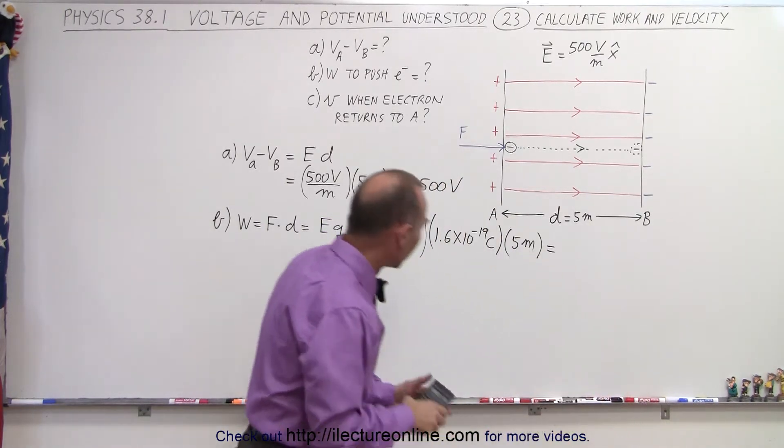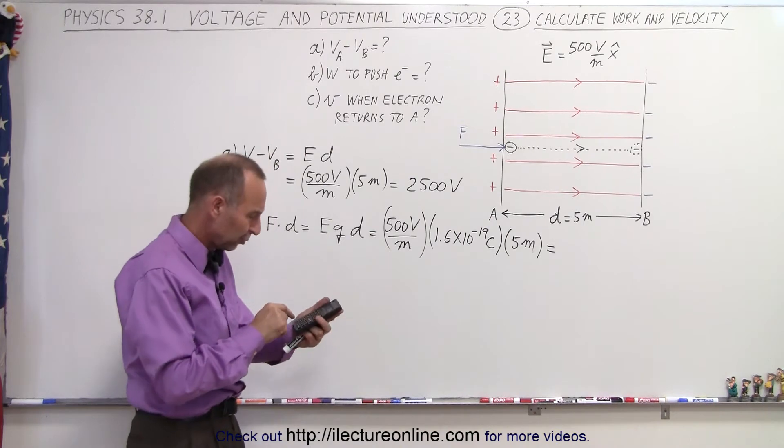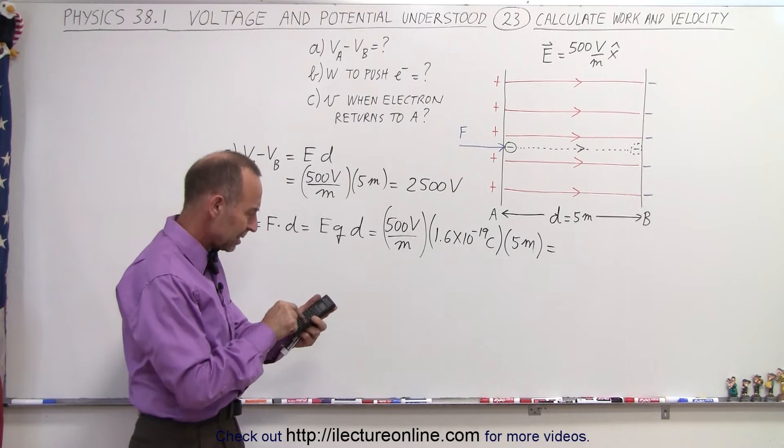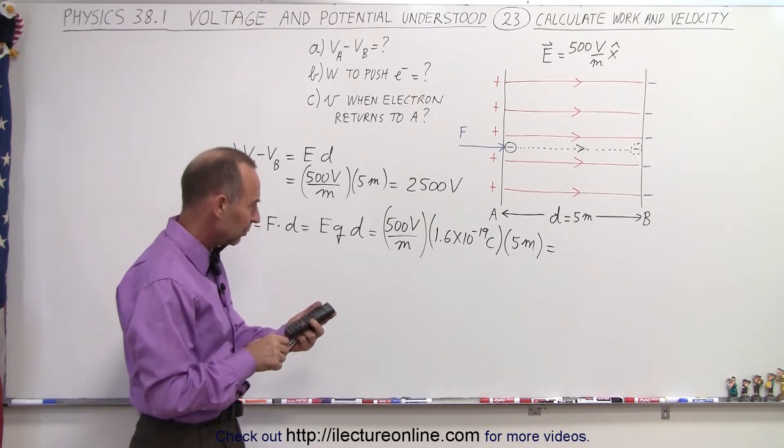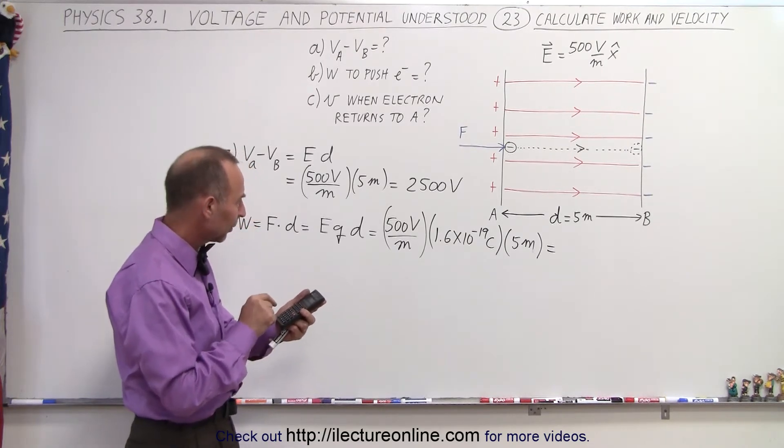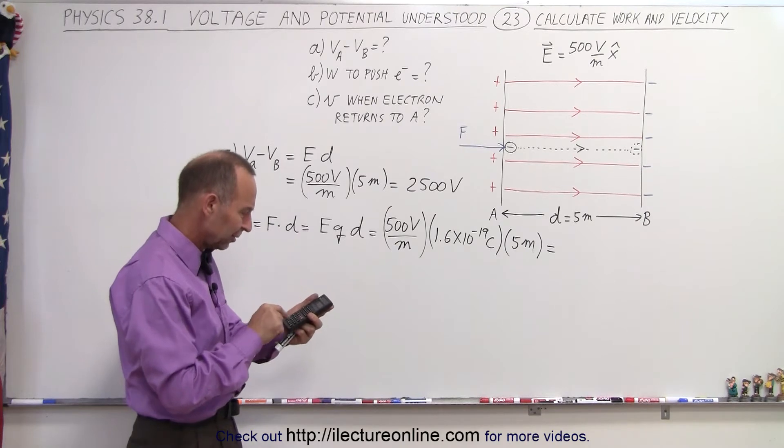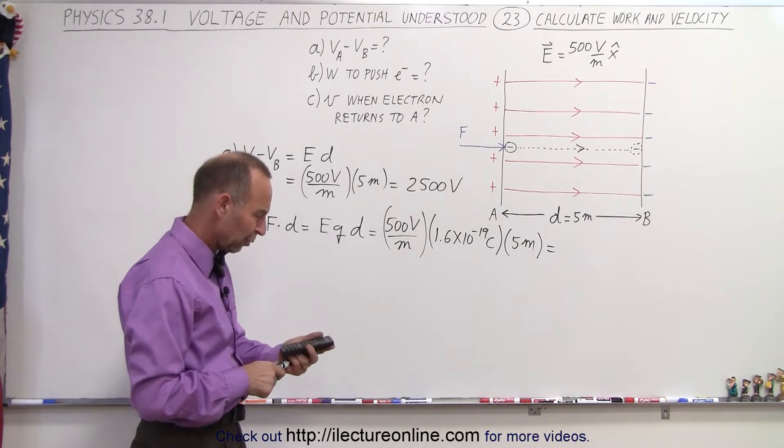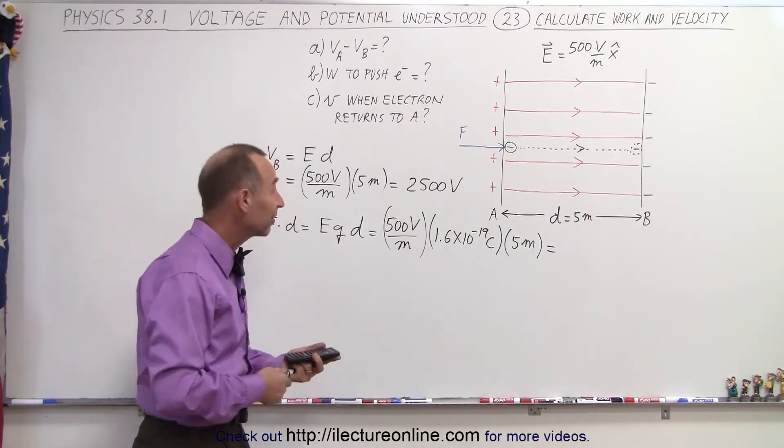For that, we need a calculator. So we have 2,500 times 1.6 E to the 19 minus, and that's 4 times 10 to the minus 16.